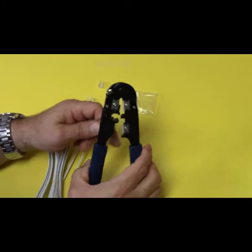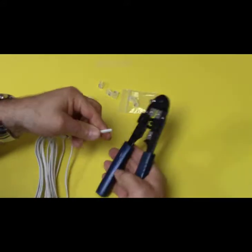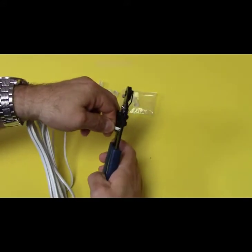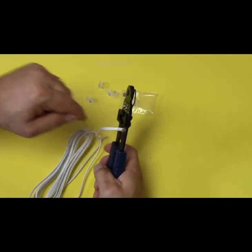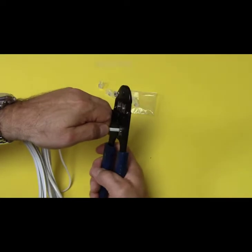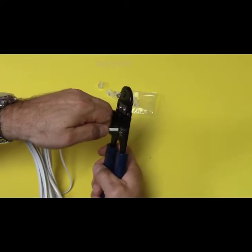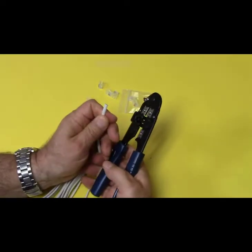So first thing we want to do is position our cutters where we have it square across and the wire is coming out perpendicular to the cutters. We're just going to squeeze, and now we have a nice square cut.